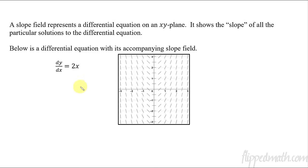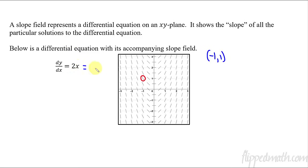Let me give you the example here. We have dy/dx equals 2x. A slope field lets you choose any point you want. For example, I could choose the point negative one, one. If I plugged that into this differential equation, there's no y value so it's just the x. Plug in the negative one and that gives you negative two. And look at what I circled there — that hash mark has a slope of negative two. So that would be right.